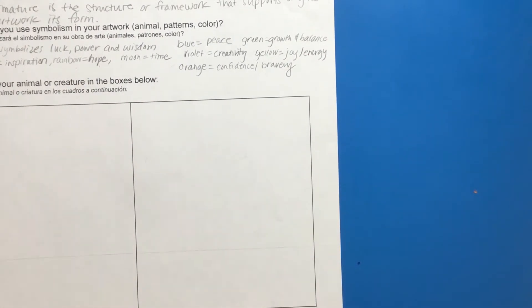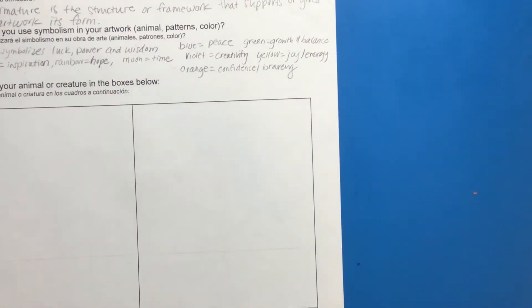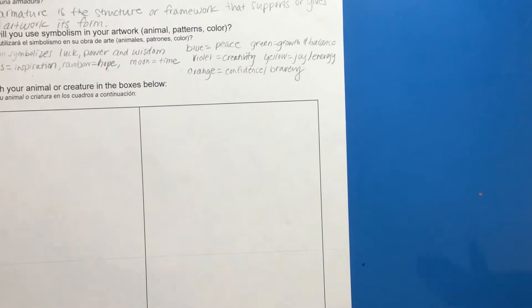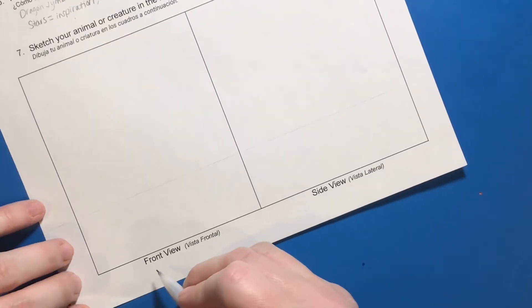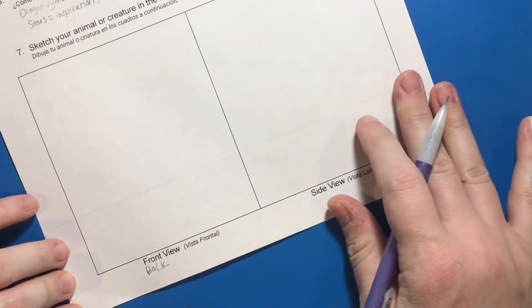Once you have decided on your symbolism or your approach, you could choose to look up some inspiration on your computer. You do need to sketch it from two different views. And so it could be a front or a back view if you want to, and a side view.